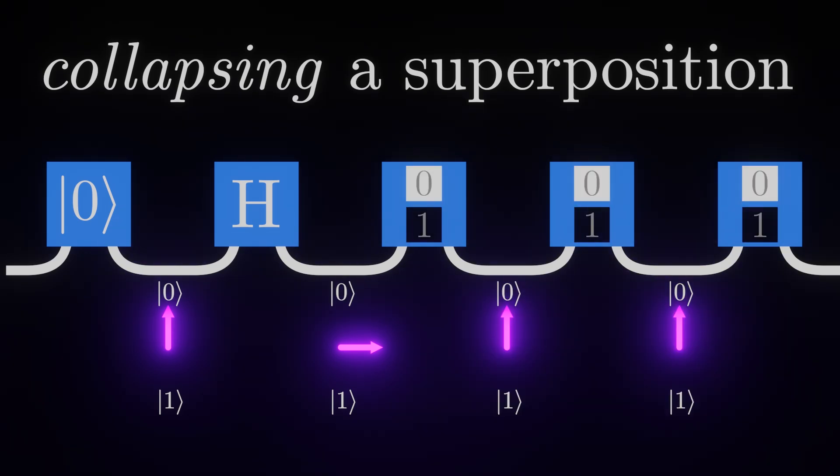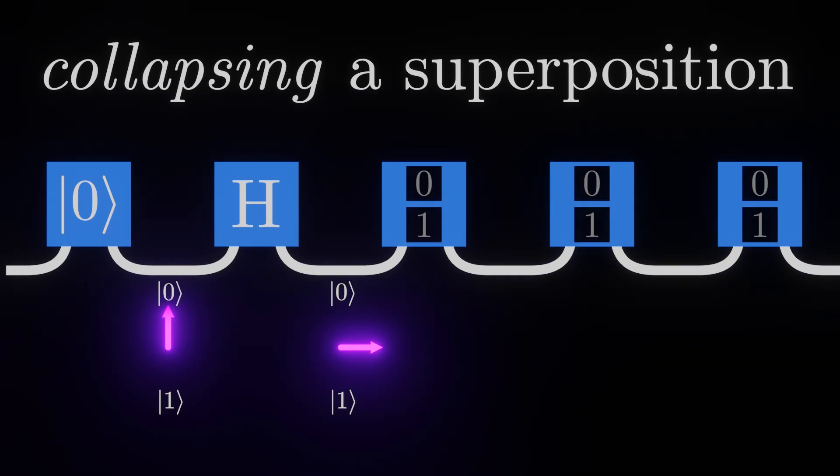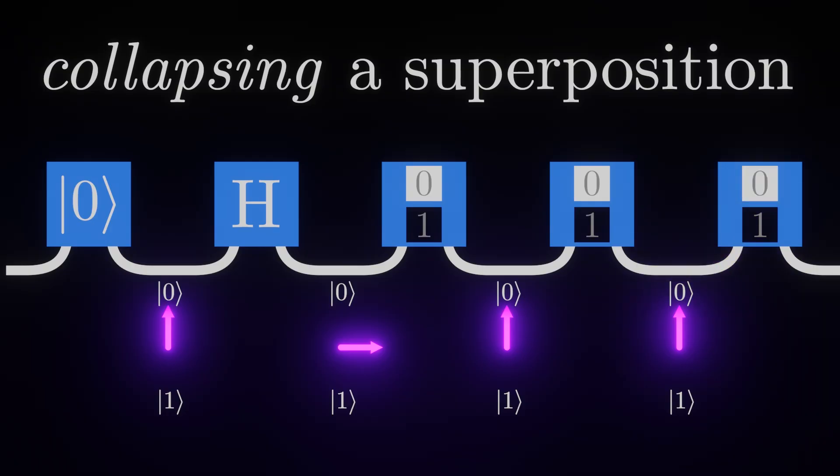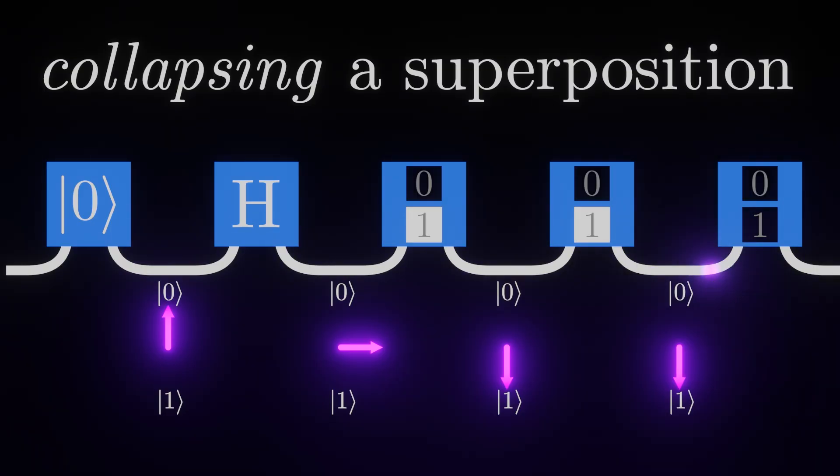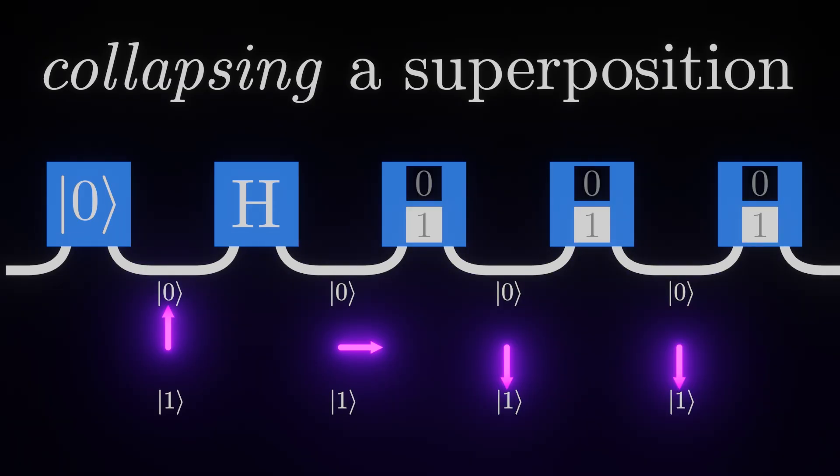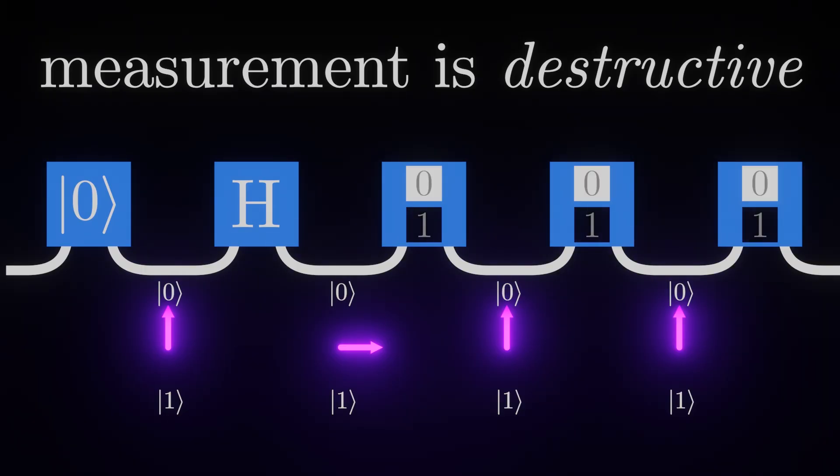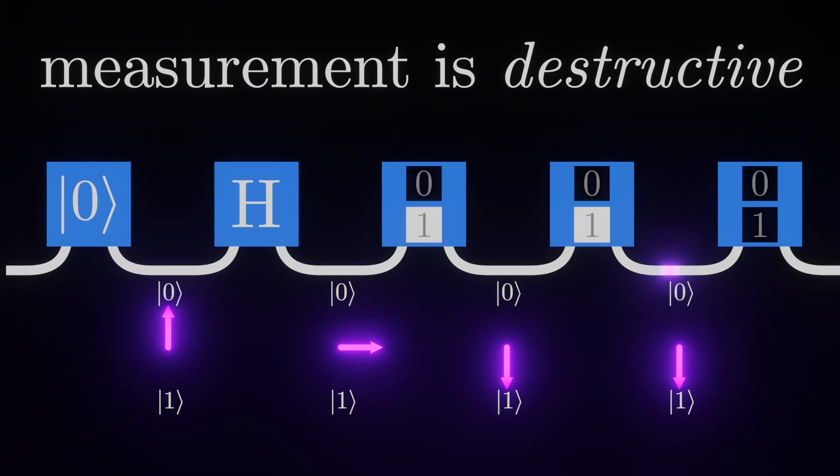The reason we still call this the measurement gate and not the collapsing gate is because there's no known way to directly measure the properties of a superposition without collapsing it. By doing this with a measurement gate, we learn what specific state the superposition collapsed to. This is also why we say that measurement is destructive. The process of measuring a qubit destroys some of the information it carries.